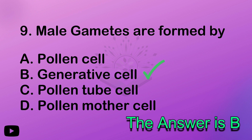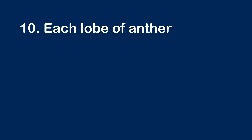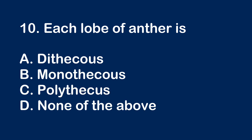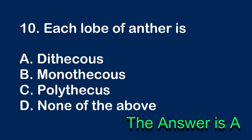Each lobe of an anther — one anther, one lobe. There are two lobes per anther. Di means dithecous. Option A — dithecous.